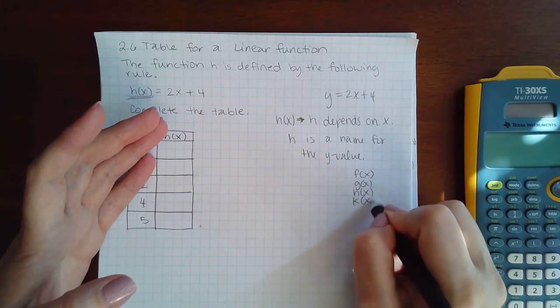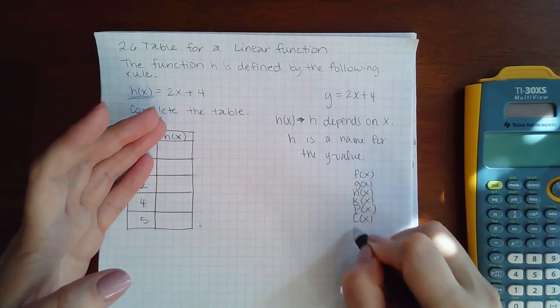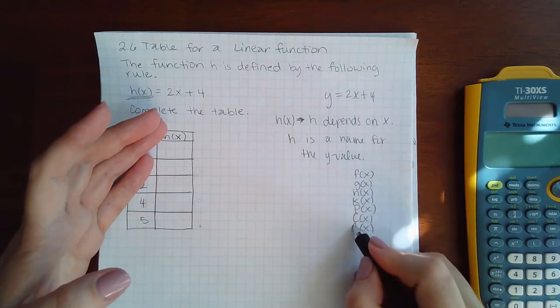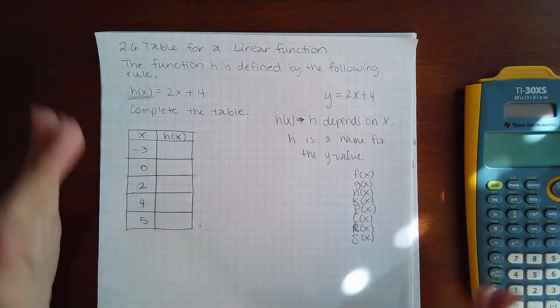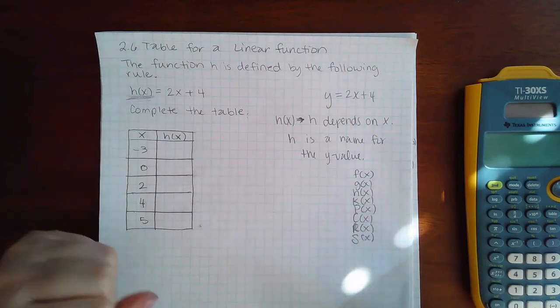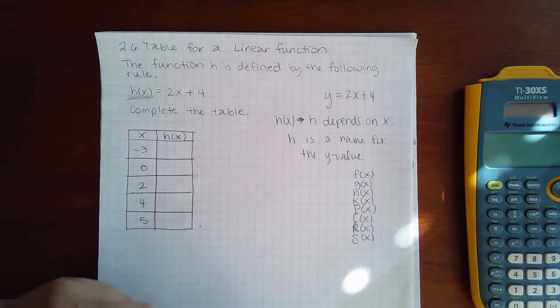I've seen k of x, p of x, c of x, r of x, s of x. There's a whole bunch of different, I mean, you could use any letter you want to essentially. But we have different letters because they are different lines or different functions.